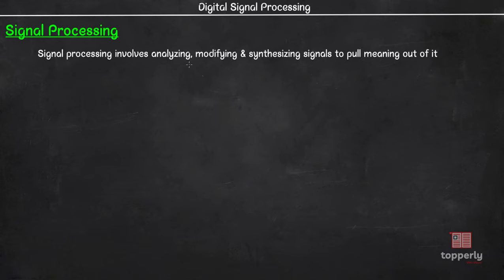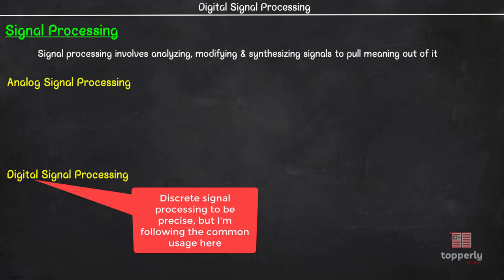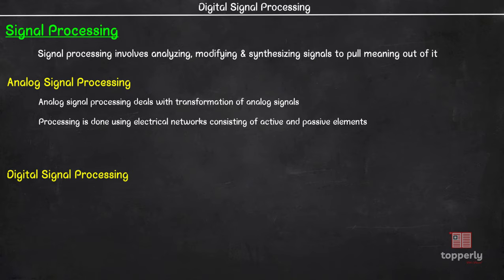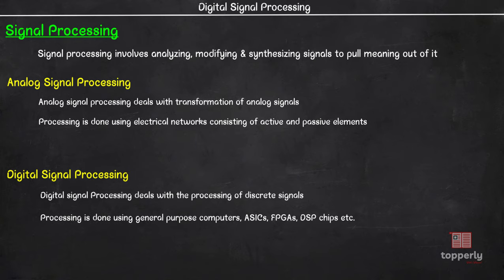Signal processing involves analyzing, modifying and synthesizing signals to pull or extract meaning out of it. Signal processing can be broadly classified into analog signal processing and digital signal processing. As you can guess, analog signal processing deals with transformation of analog signals and the processing is done using electrical networks consisting of active and passive elements, i.e., op-amps, resistors, capacitors, inductors, etc. On the other hand, digital signal processing deals with the processing of discrete signals. Here the processing is done by general purpose computers or by digital circuits such as ASICs, FPGAs or specialized DSP chips.